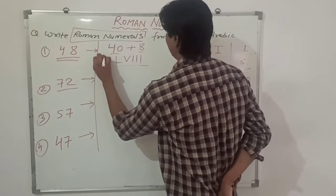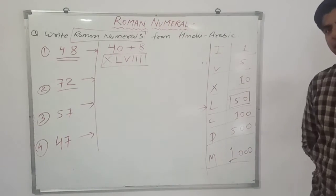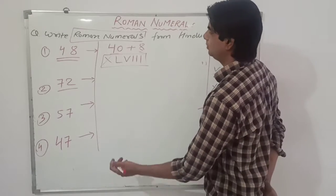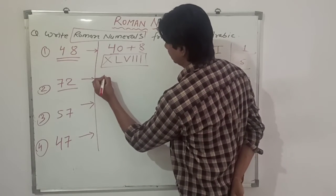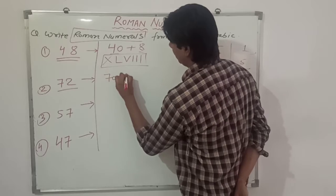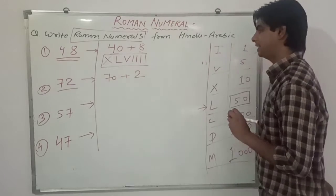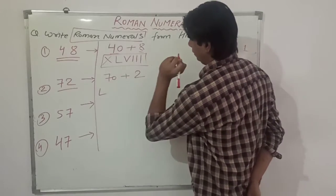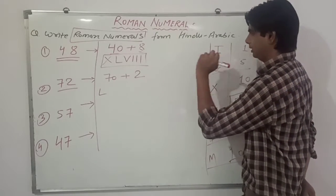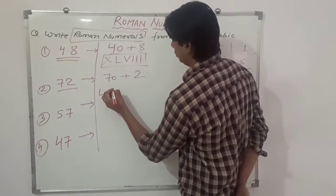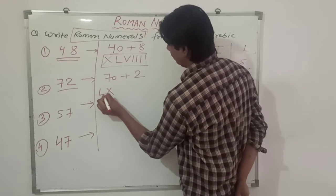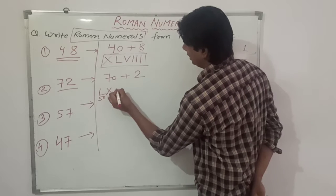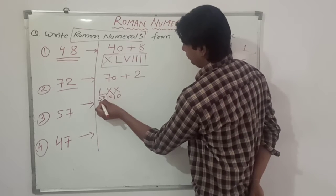Next is 72. We break it into tens and ones: 70 plus 2. For 70, we have L which is 50, and we need to add 20 more. X means 10, so 50 plus 10 is 60, then one more X gives 70. So 70 is written as LXX.